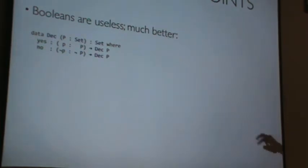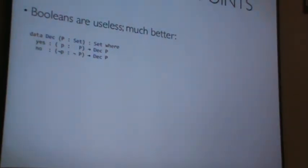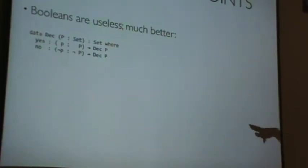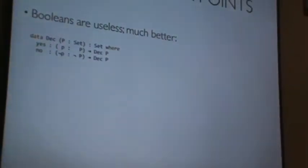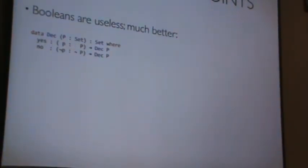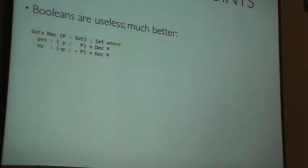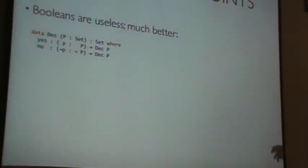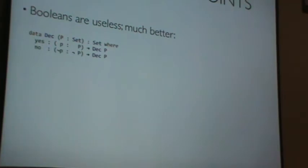A dec of any statement, because a type is a statement, a logical statement, has two constructors: one that the statement is true and the other one that the statement is not true. Anywhere you'd use a bool in most programming languages, you'd probably want to be using one of these in Agda because it gives you knowledge. Pattern matching on it gives you the proof of the statement being true.